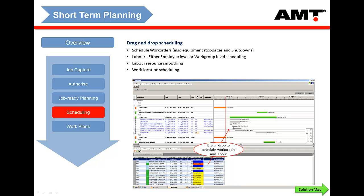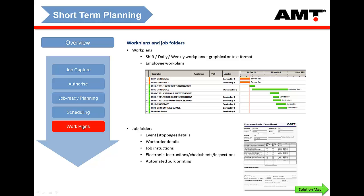For scheduling, there's a Gantt chart where you can schedule work, define when it's going to be done and who's going to do it — all done within AMT. From AMT, users will be able to produce their work plans, job folders, weekly work plans, and daily work plans.